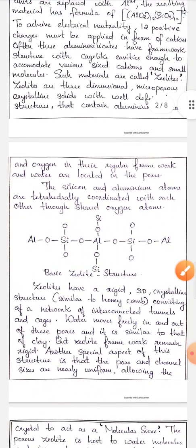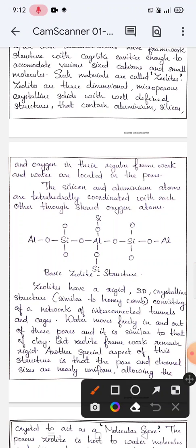Now, look at the basic zeolite structure. I have already said that zeolites contain aluminum, silicon and oxygen in their regular framework. Here, the silicon and aluminum atoms are tetrahedrally coordinated with each other through shared oxygen atoms.